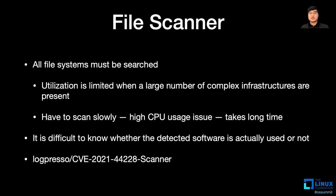Before implementing with eBPF, let's see what methods can be used to detect software components. The first thing that comes to mind from the Log4j incident is the Log4j scanner. A file scanner is one of the most reliable ways to determine if certain software is present on your system. However, it takes a lot of time and effort to scan the entire file system. Scanning a live system sometimes requires a slow scan because resource usage must be limited. Also, it is not known whether the software present on the system is actually running.